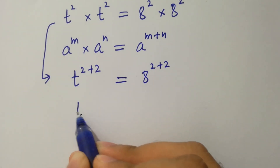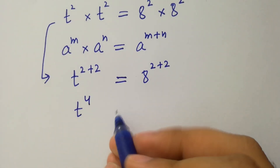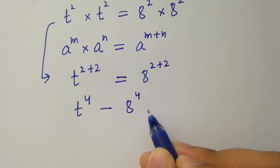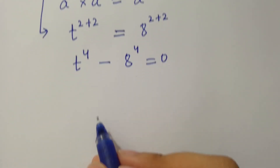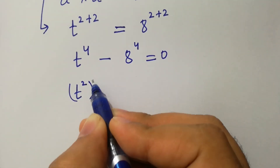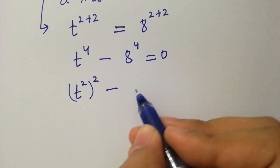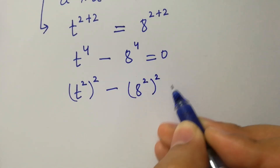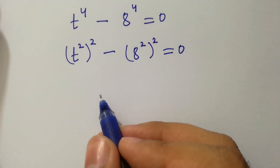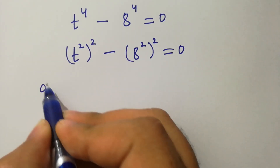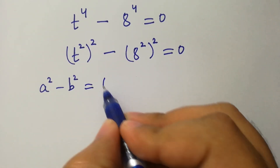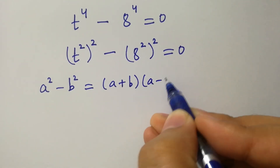t to the power 4 minus 8 to the power 4 equals 0, which is the same as t squared to the power 2 minus 8 squared to the power 2 equals 0, since 2 times 2 is 4. By this, we apply the formula of a squared minus b squared, which equals a plus b times a minus b.